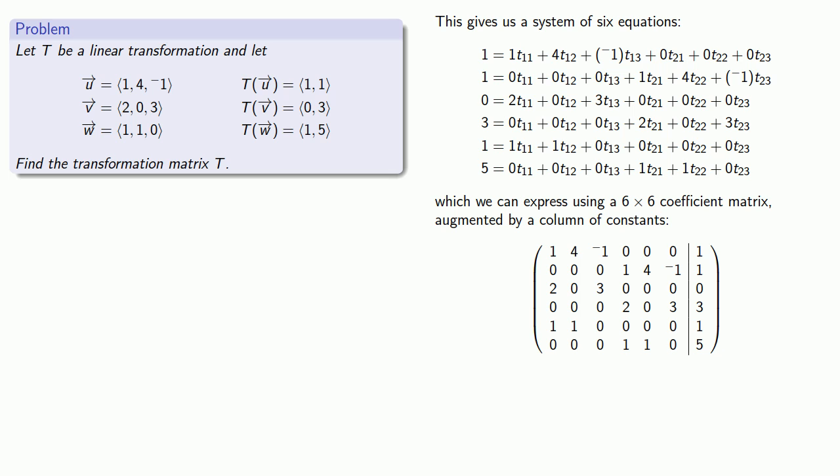While we could solve this problem by row reducing this 6x6 coefficient matrix, a good habit to get into as a mathematician and as a human being is to ask yourself the question: While I can solve the problem this one way, is there a second way that we can solve the problem? And once you've done that, you might ask yourself, is there a third way or maybe a fourth way?